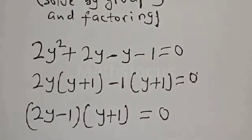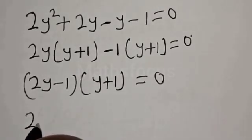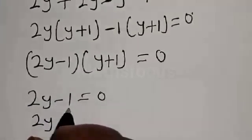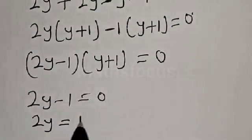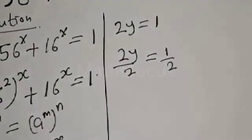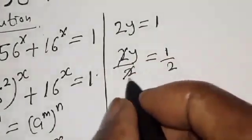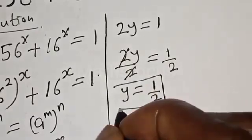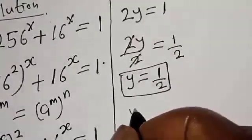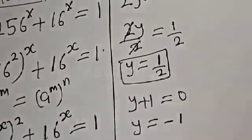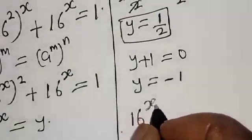Then we have 2y minus 1 equal to 0, which gives y equal to 1 over 2. That is the first value of y. For the second case, y plus 1 is equal to 0, so y is equal to minus 1.